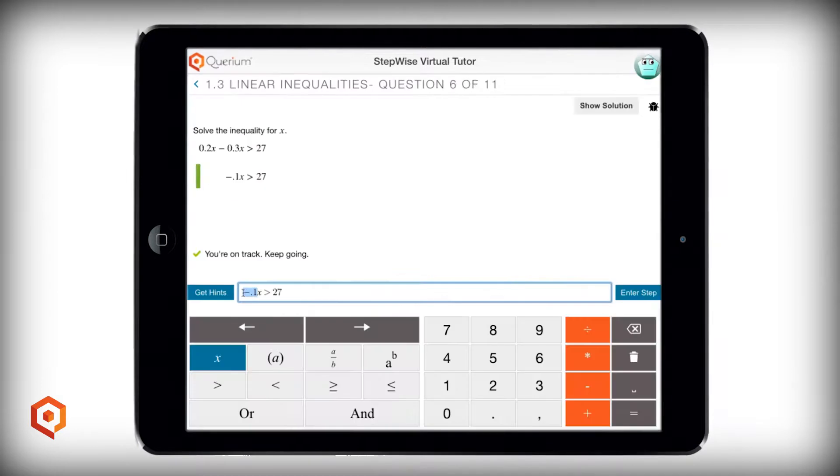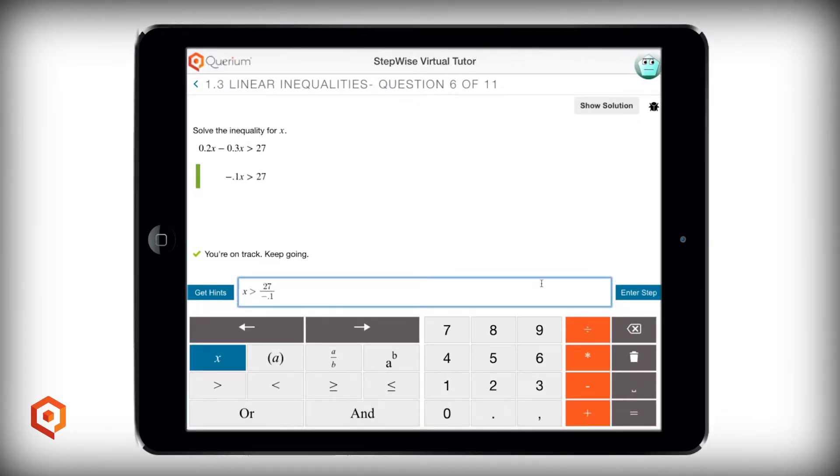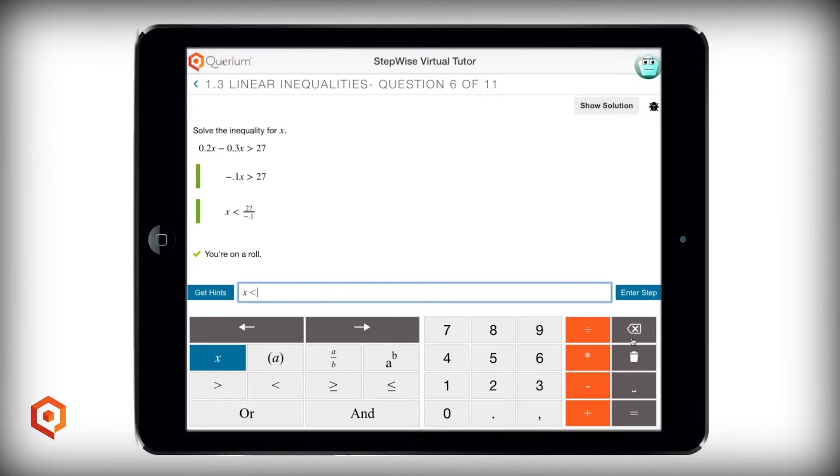One of Stepwise's greatest strengths is the error analysis. We worked with master teachers to identify common errors students make and how best to respond to them. It doesn't matter if the mistake was from something the student should have learned in fourth, fifth, or sixth grade. Stepwise can recognize it, report it to the teacher, and coach the student back on track.